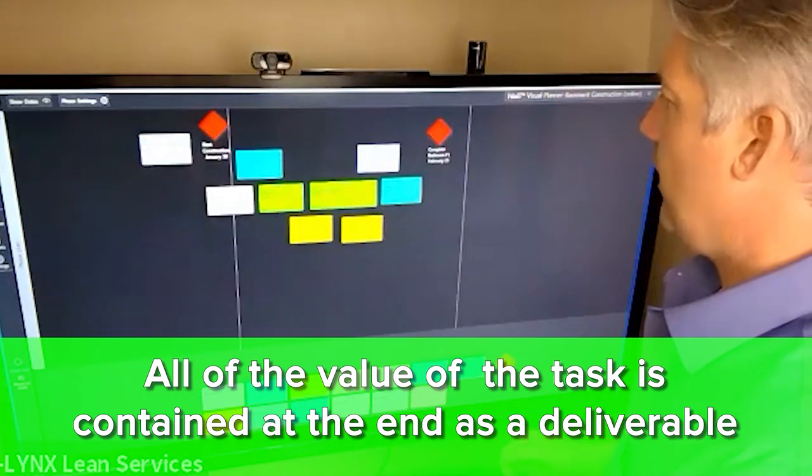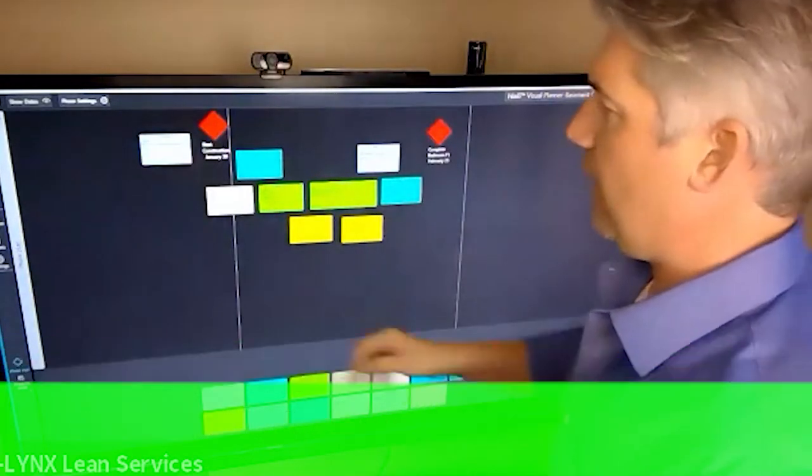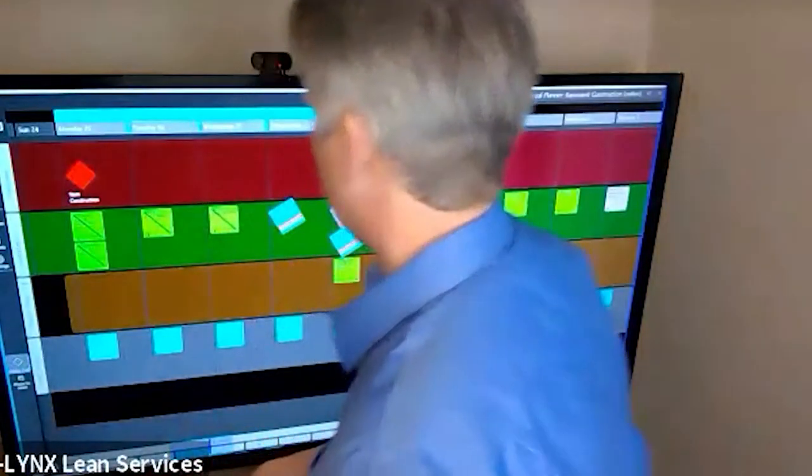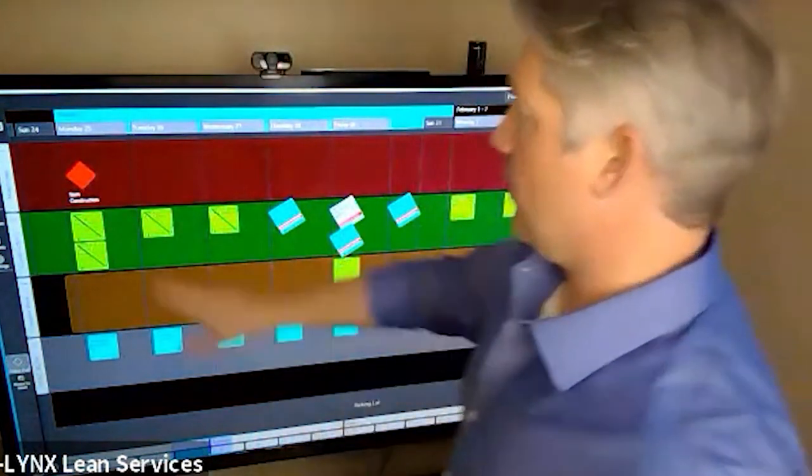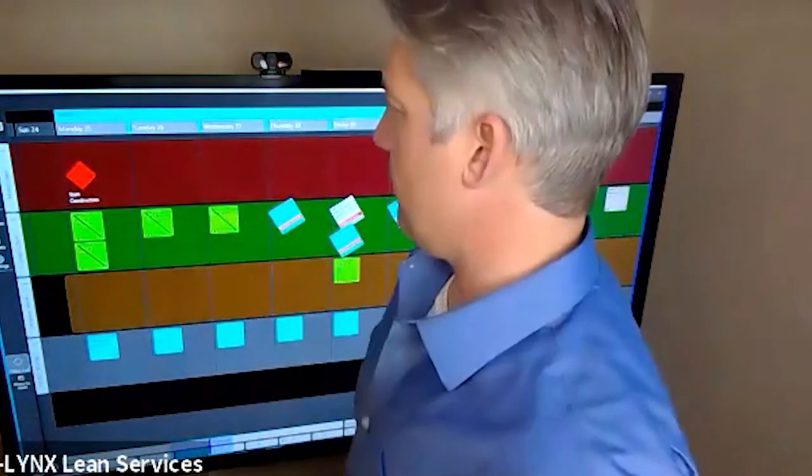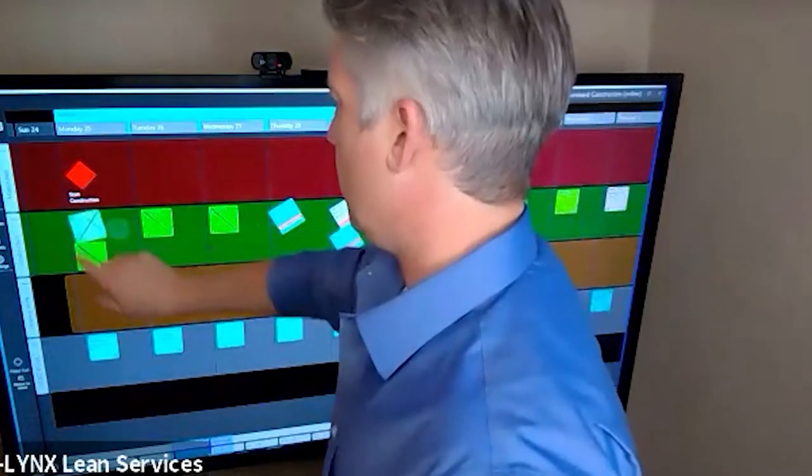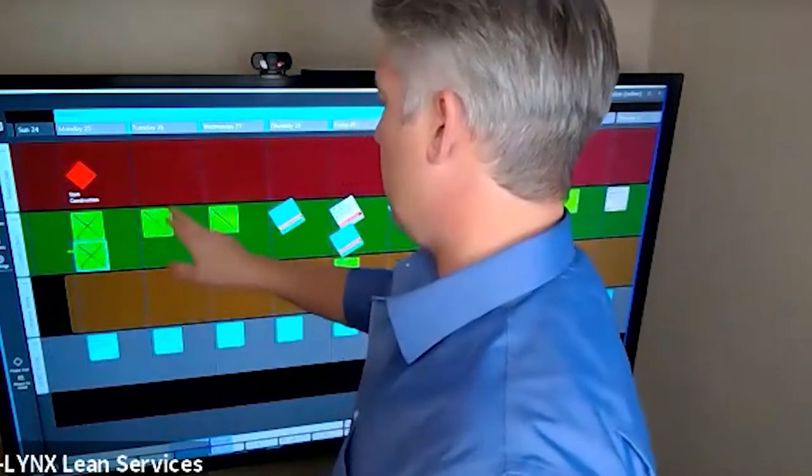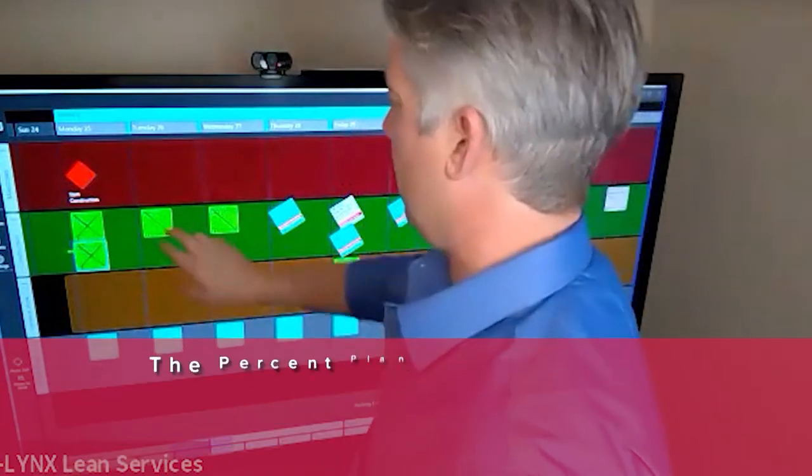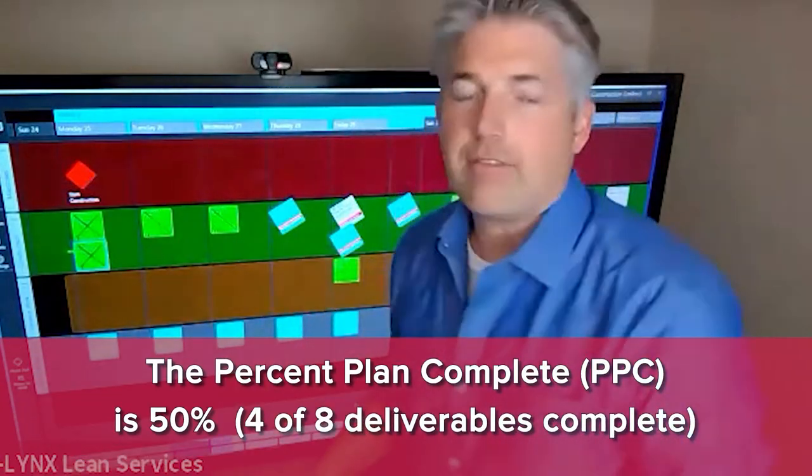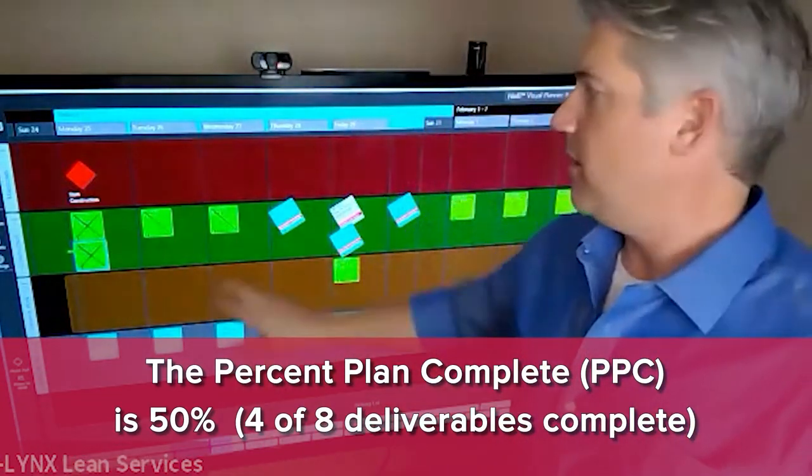In week one, Eric had eight deliverables and he accomplished four of them, which makes his commitment to me and himself 50% reliable. So we call that a commitment reliability index, or as it's known in the industry, PPC - the percent planned complete.